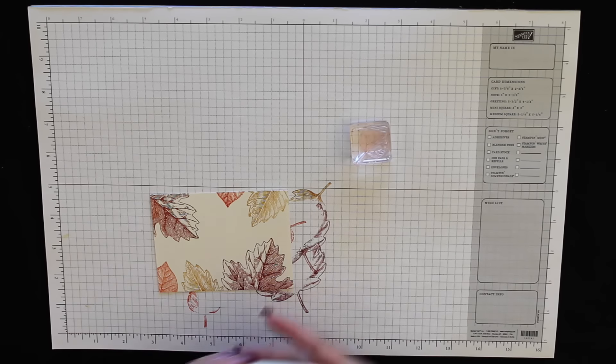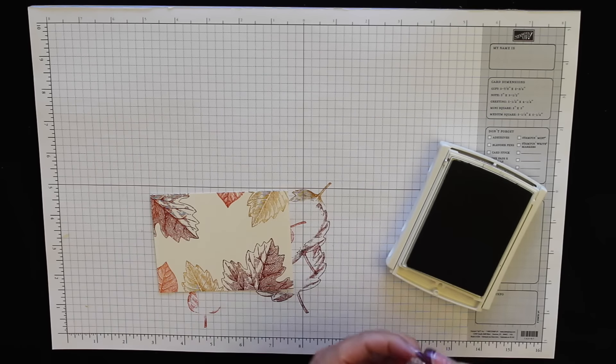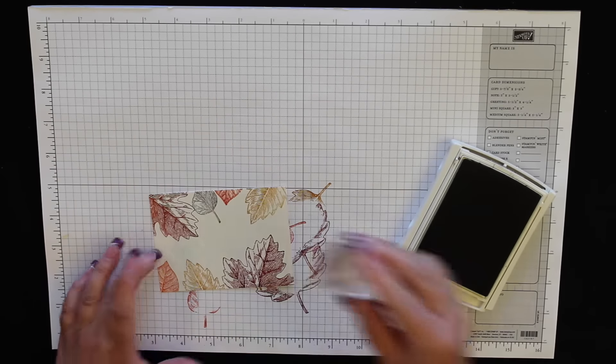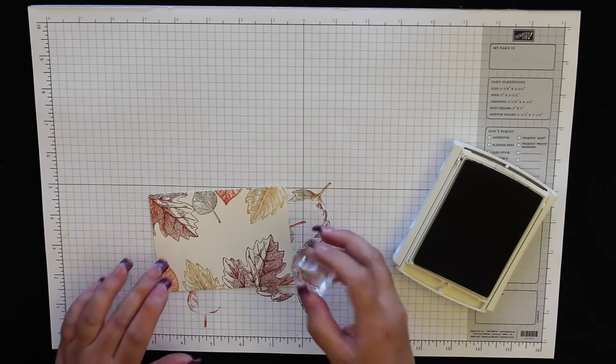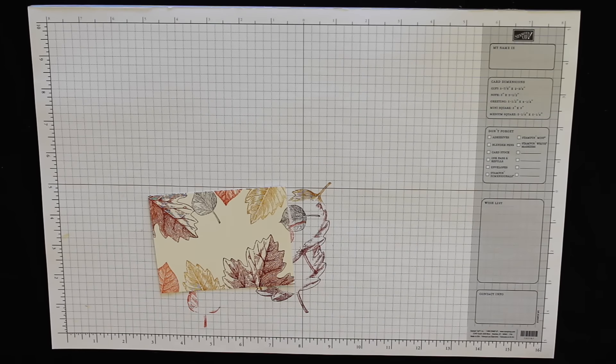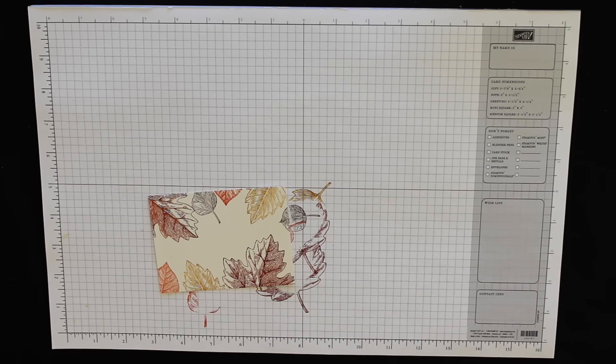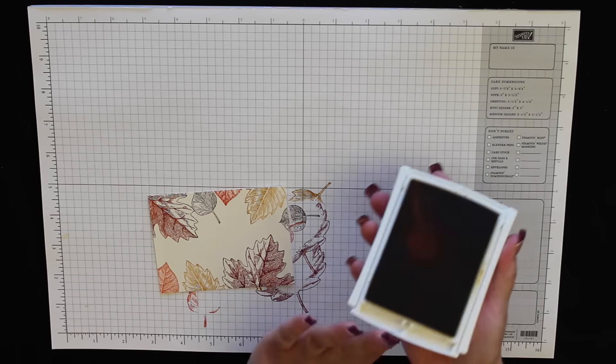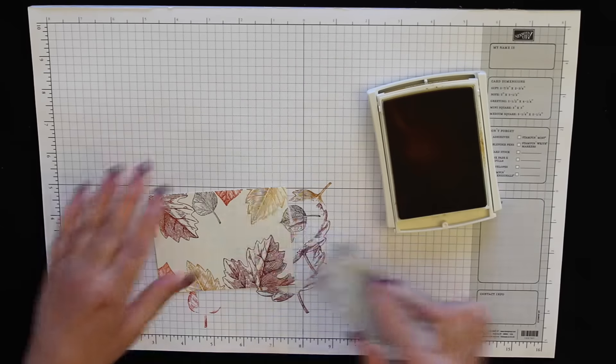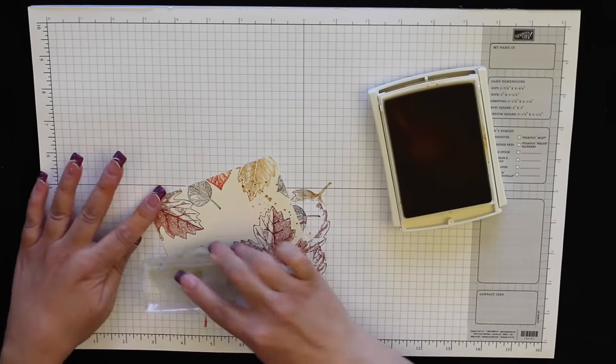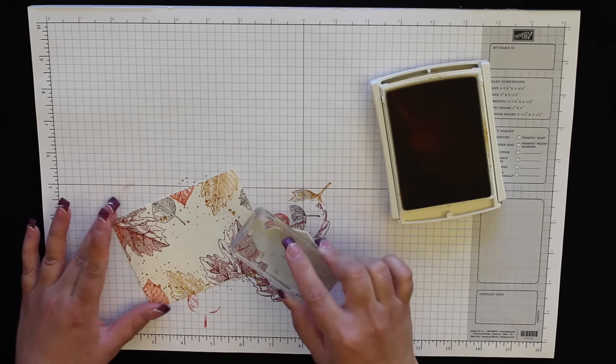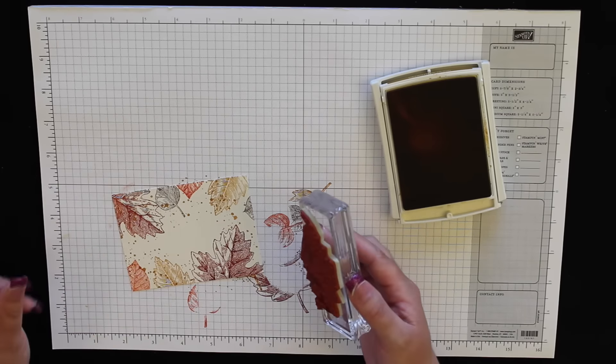Okay, and last we have this little teeny tiny leaf image and our Chocolate Chip ink. I'll put one of these guys up here and maybe a little one peeking out right here. Okay, now I'm going to go ahead and bring back in the Delightful Dijon ink because I want to add some splatters and speckles to it. I'm going to ink it up and just stamp it randomly all over, right on top of the leaves.